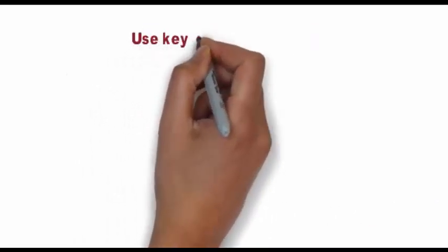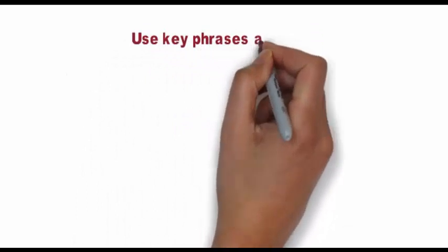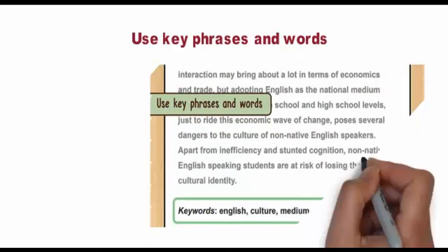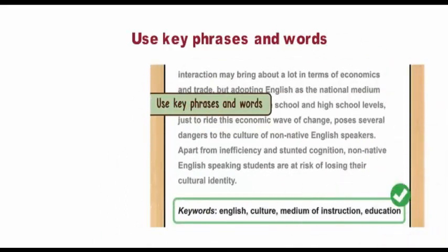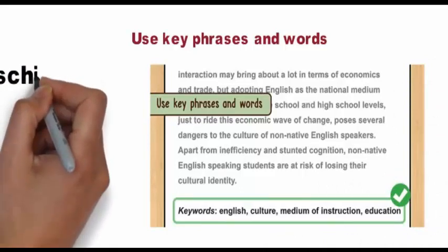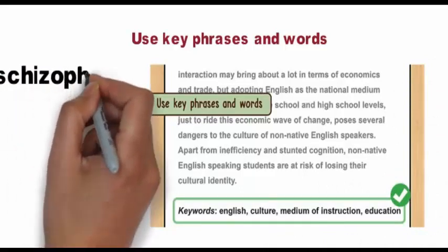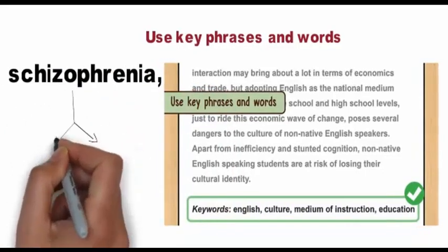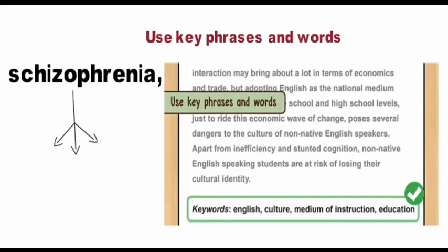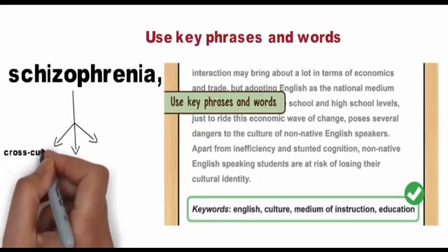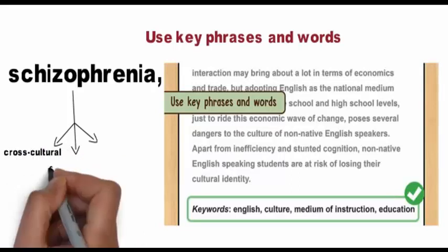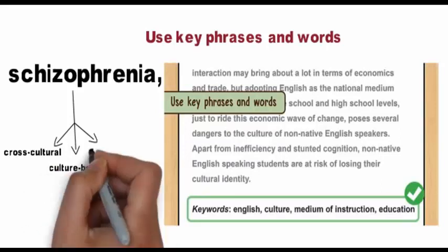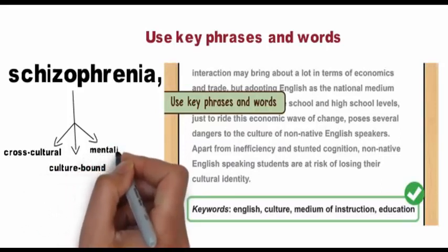Use key phrases and words. If your abstract is to be published in a journal, you want people to be able to find it easily. In order to do so, readers will search for certain queries on online databases in hopes that papers will come up. For example, if you're writing a paper on the cultural differences in perception of schizophrenia, be sure to use words like schizophrenia, cross-cultural, culture-bound, mental illness, and societal acceptance. These might be search terms people use when looking for a paper on your subject.